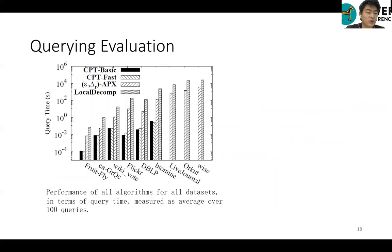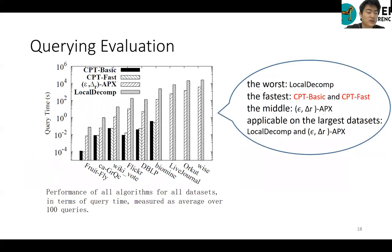First, we report the querying evaluation. As shown in this figure, all our three query algorithms are faster than the online baseline method. Moreover, on the three largest graphs, LiveJournal, Orkut, and Wise, CPT-basic and CPT-fast cannot finish the indexing construction for querying evaluation.